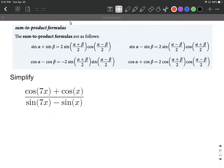In this example, we're asked to simplify a trigonometric expression. This one happens to be a rational expression. To do so, I think the easiest way is to use our sum-to-product formulas.